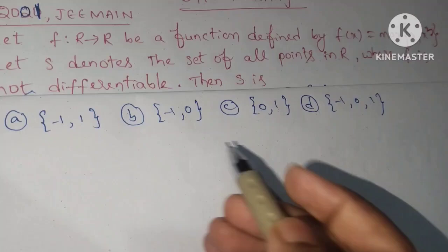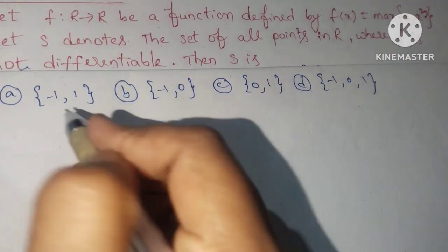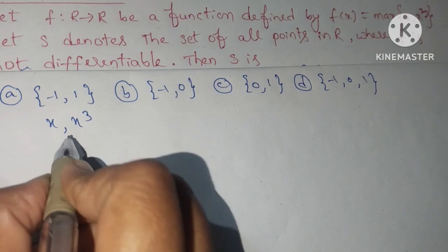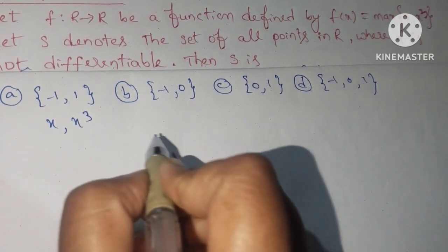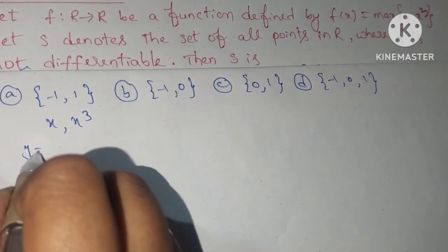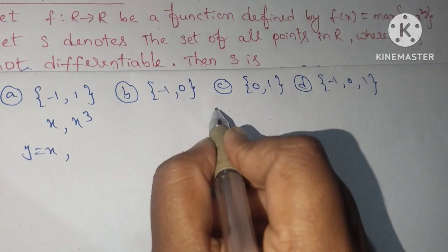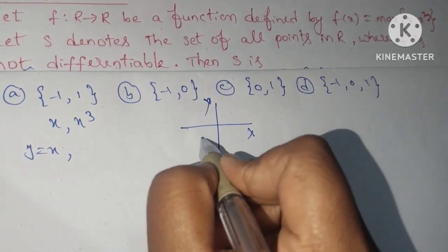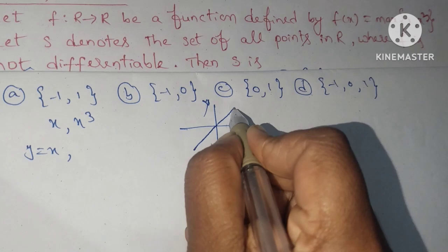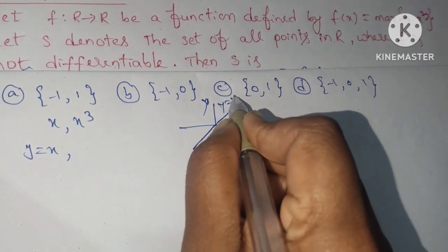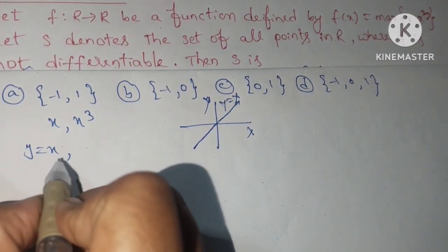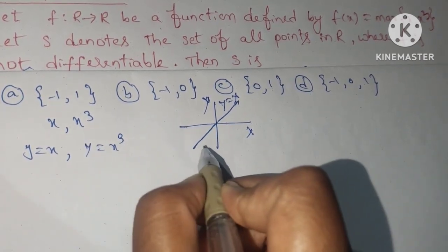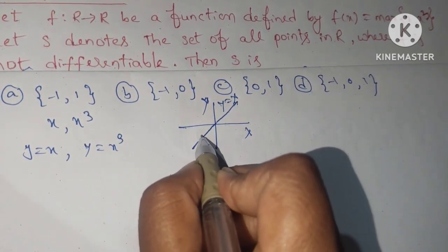First write the given function: max(x, x³). We draw the graph first. For y = x, we get a linear graph through the origin. Next, for y = x³, we are getting the cubic curve like this.